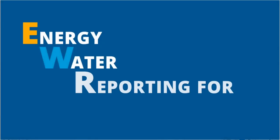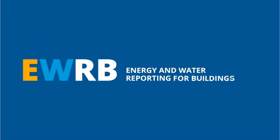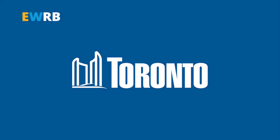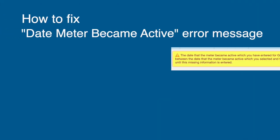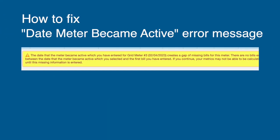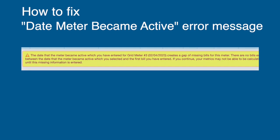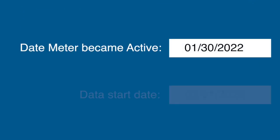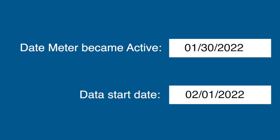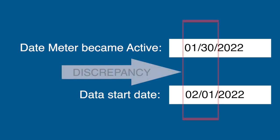Welcome to this short energy and water reporting video for buildings by the City of Toronto. This troubleshooting video shows you how to fix the date meter became active error message. The error message appears if there is any gap between the date meter became active and the start date of your uploaded data.